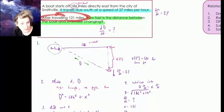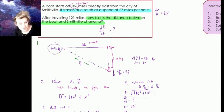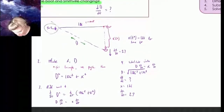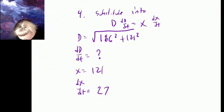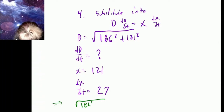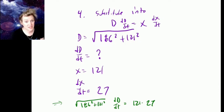After traveling 121 miles, x(t*) equals 121 for some t*. From that I compute the value of the diagonal distance using the square root. So I've got my substitutions ready. Then I have: the square root of 186² plus 121² times dd/dt equals 121 times 27. That was the substitute step.